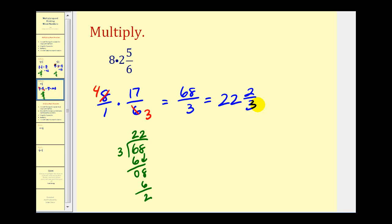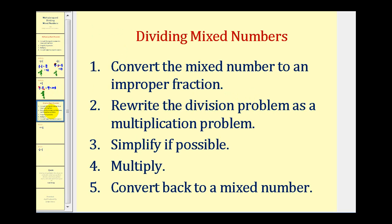Let's talk about division now. The process will be pretty much the same: convert mixed numbers to improper fractions, then rewrite the division problem as a multiplication problem, simplify, multiply, and then convert back to a mixed number. It's the same except we have to rewrite the division problem as a multiplication problem.